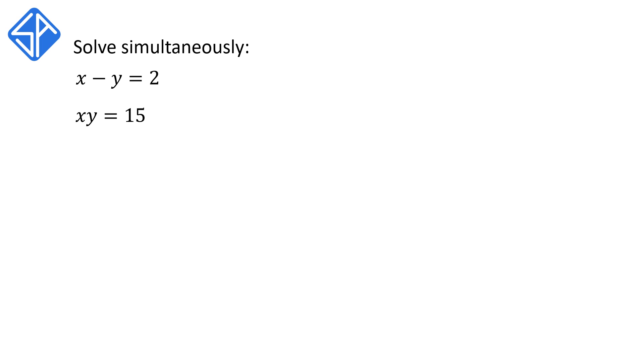In this video, we're going to look at another example on how to solve nonlinear simultaneous equations. For this example, we've got two equations. Our first equation is x minus y is equal to 2. This is a straight line graph.